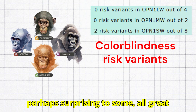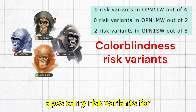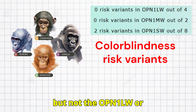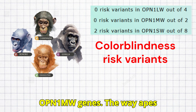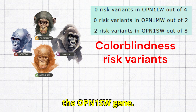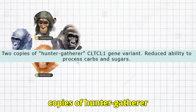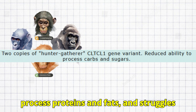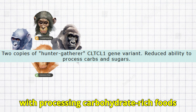Perhaps surprising to some, all great apes carry risk variants for colorblindness in the OPN1SW gene, but not the OPN1LW or OPN1MW genes. The way apes see color might be similar to humans who carry risk variants for colorblindness in the OPN1SW gene. Additionally, all great apes carry two copies of the hunter-gatherer CLTCL1 gene variant, which predisposes them to better processing of proteins and fats, and struggles with processing carbohydrate-rich foods and sugars.